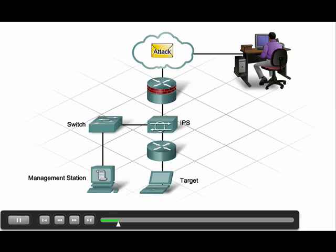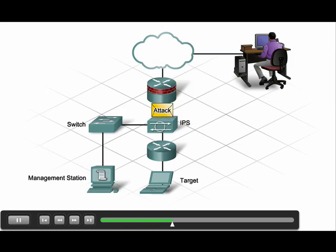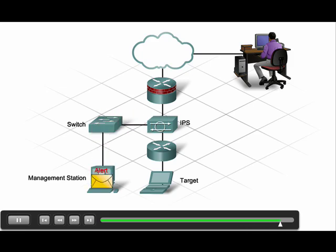Unlike intrusion detection systems, which only passively listen to network traffic and react to situations, intrusion prevention systems actively listen to network traffic and respond to attacks in real time. An IPS can block real-time suspicious traffic as well as future attacks of the same type. Therefore, when comparing intrusion systems, detection systems are reactive and prevention systems are proactive.